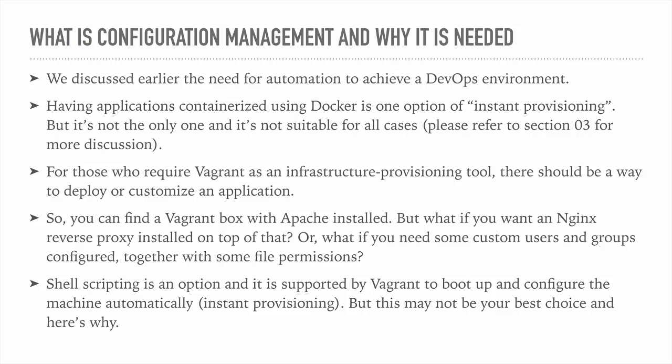We discussed earlier the need for automation to achieve a true DevOps environment. Remember in the first section of this class when we said that DevOps is a culture and an environment. This culture enables developers to produce software applications in the least possible time and with the most possible efficiency, while working together in full collaboration with all other stakeholders of the project — like the operators, the testers, quality control, and other parties.